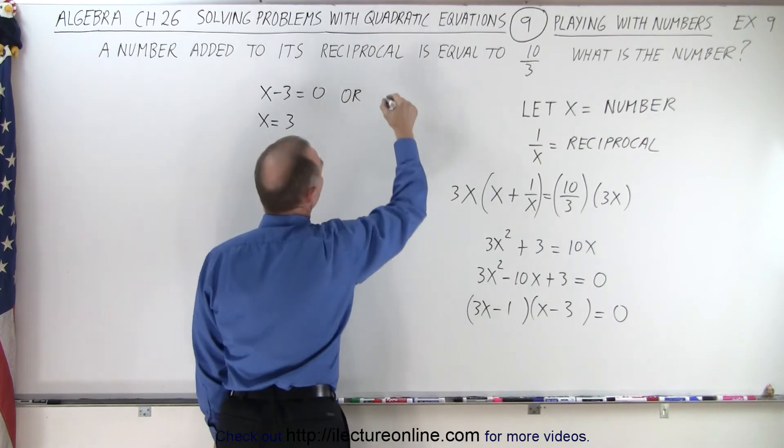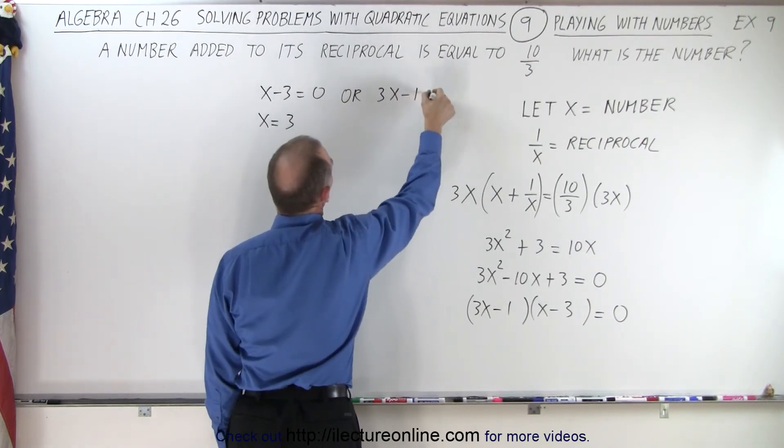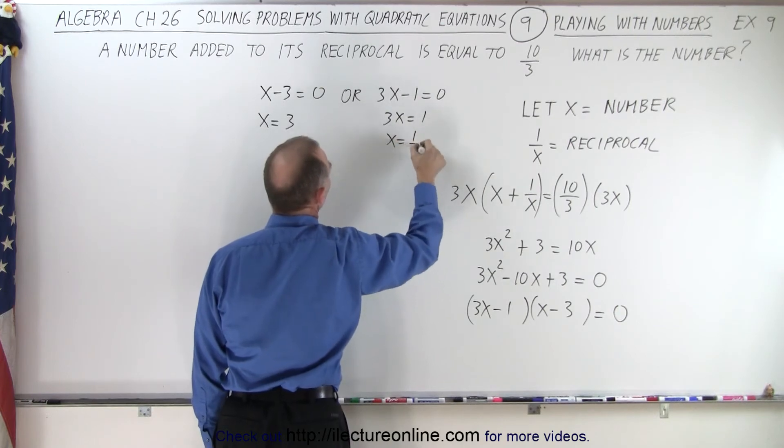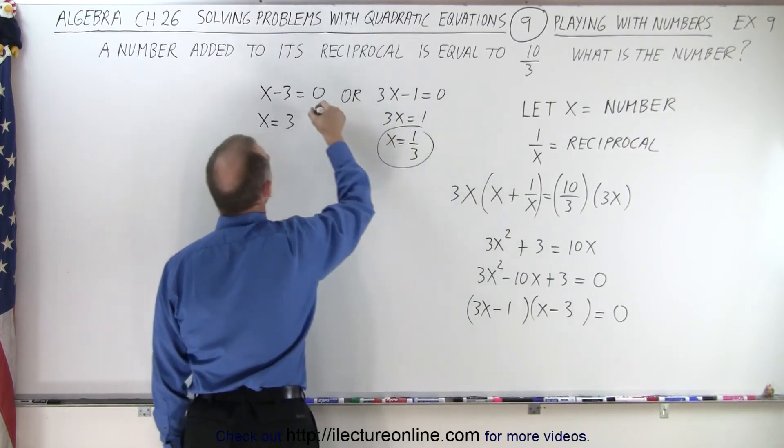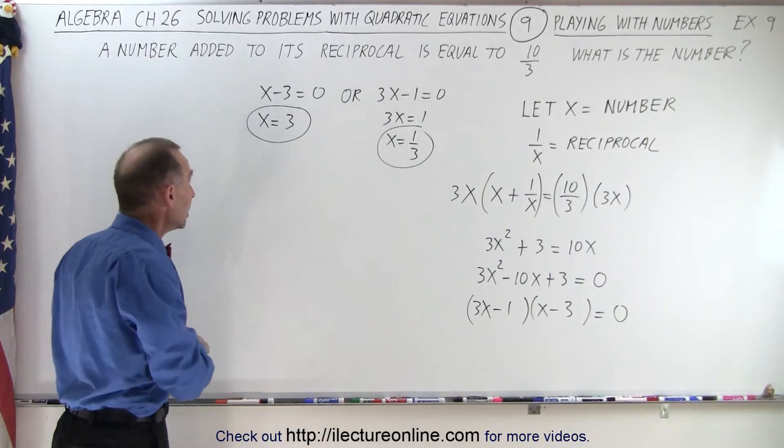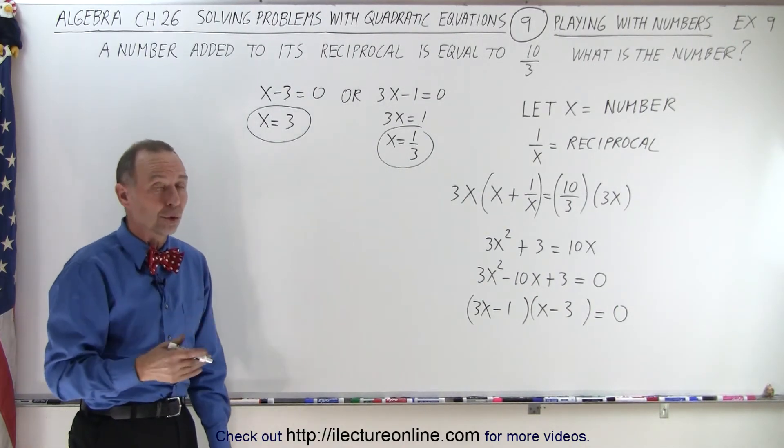Or 3x minus 1 equals 0, which means 3x equals 1 or x equals 1 third. So these are the two possible solutions. There are two solutions. x can be 3 or x can be 1 third.